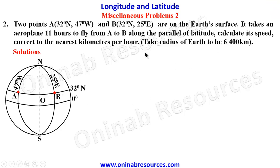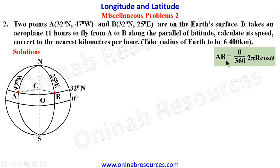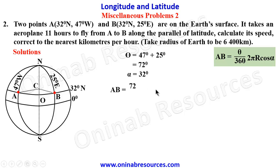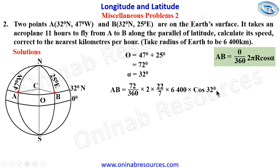We calculate the speed by finding the distance AB and dividing by the time taken. The distance is along a small circle, so the formula is: theta/360 × 2πr cos(alpha). The angular difference theta between their longitudes: since A is west and B is east, theta = 47° + 25° = 72°. The common latitude alpha = 32°. So distance AB = 72/360 × 2 × 22/7 × 6400 × cos(32°).